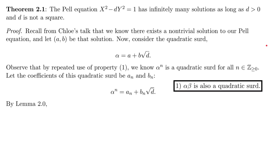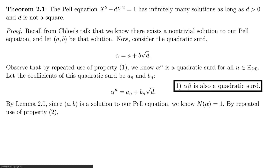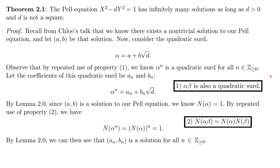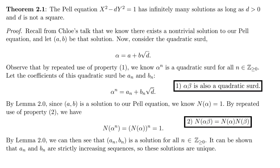By Lemma 2.0, since a, b is a solution to Pell's equation, the norm of alpha equals 1. By repeated use of property 2, the norm of alpha to the n equals the norm of alpha to the n-th power, which equals 1 to the n, which equals 1. So by Lemma 2.0, a sub n, b sub n is also a solution for all n in the non-negative integers. It can be shown that a sub n and b sub n are strictly increasing sequences, so these solutions are unique, and therefore we have infinitely many of them.